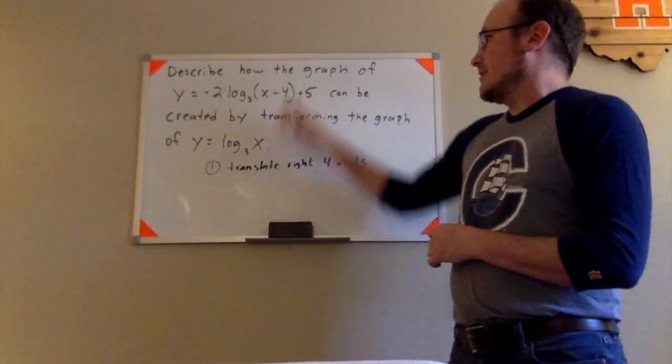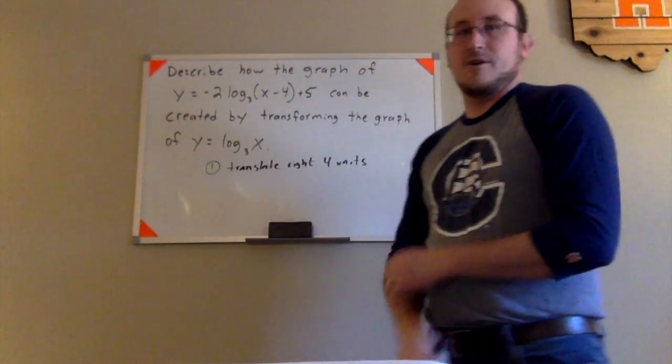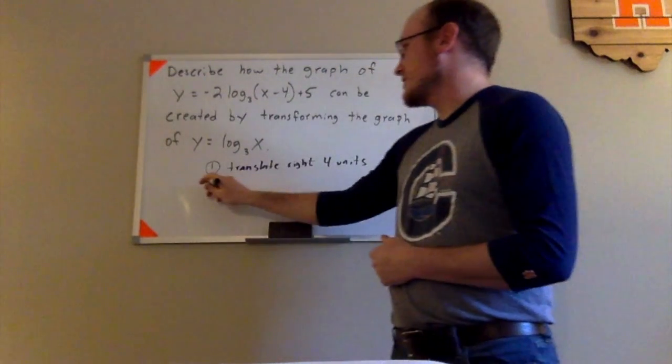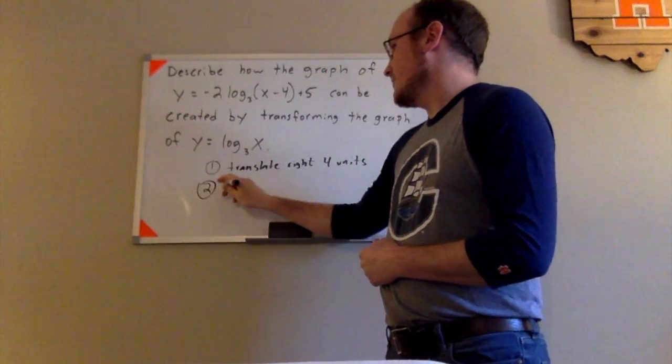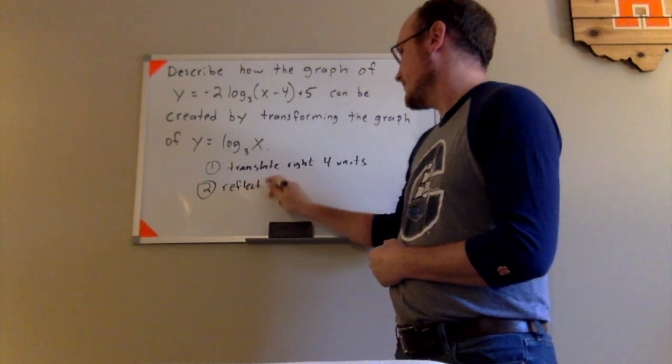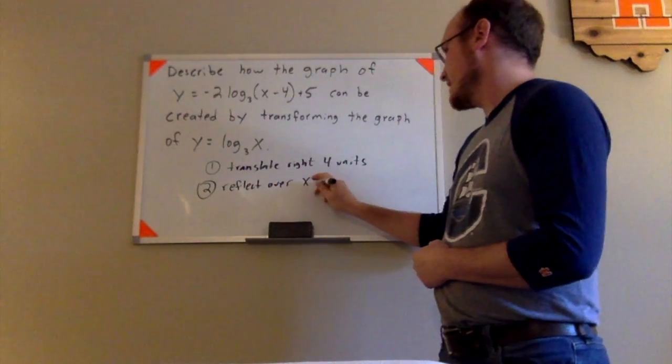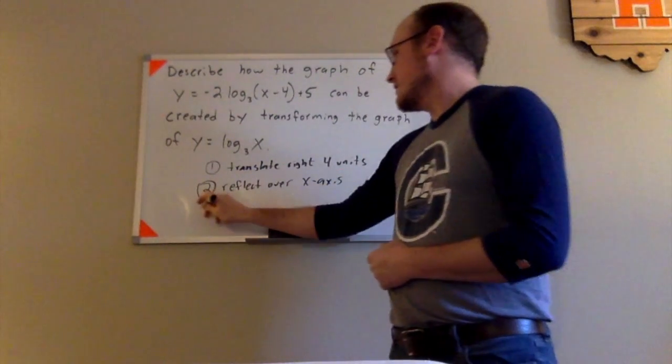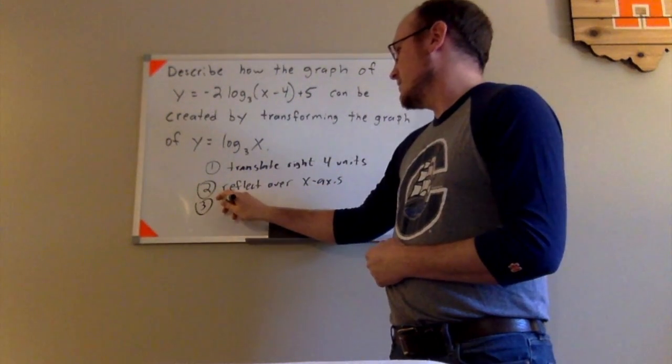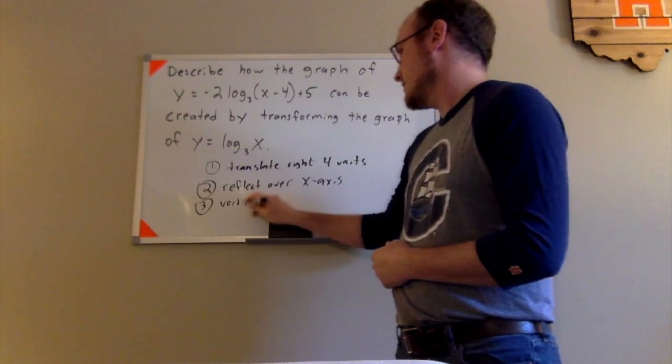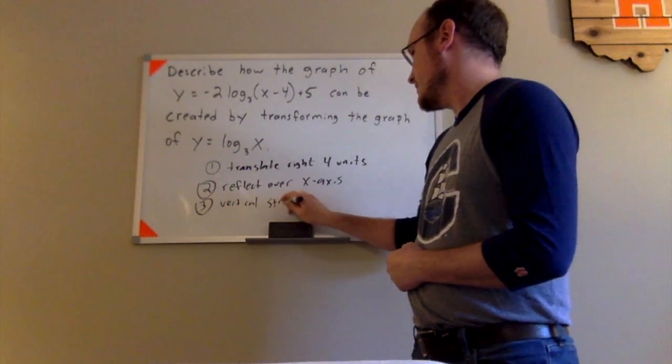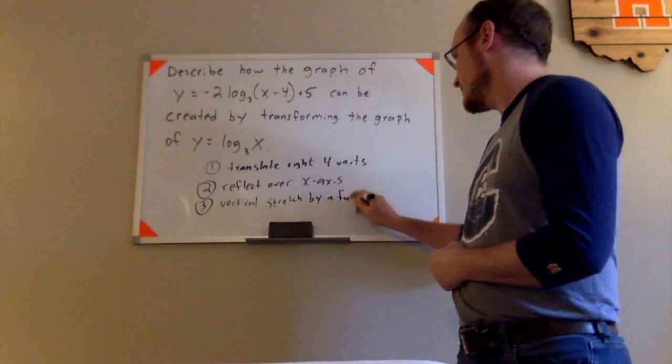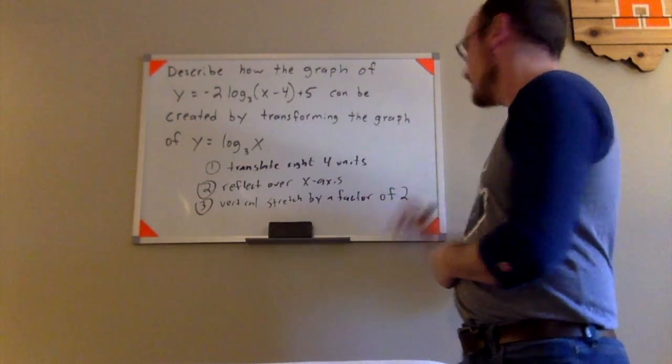Then, once I've dealt with that horizontal translation, now I'm going to look out front. I see this negative 2 out front. That actually does two things. The negative will reflect over the x-axis.